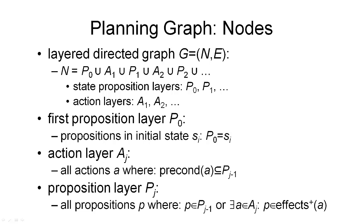I will now describe the planning graph, which is the fundamental data structure maintained by the GraphPlan algorithm. The planning graph is a layered directed graph G consisting of nodes and edges, where edges are directed and go unidirectionally from one node to another. The graph is layered, meaning the nodes can be divided into disjoint sets called layers. The nodes consist of layers P0, A1, P1, A2, and so on. We distinguish two types of layers: state proposition layers denoted by P (P0, P1, etc.) and action layers denoted by A (A1, A2, etc.).